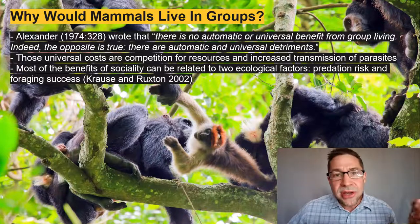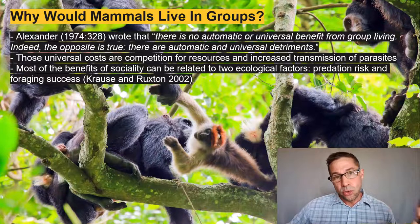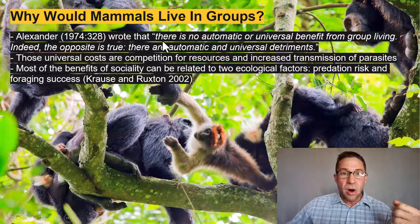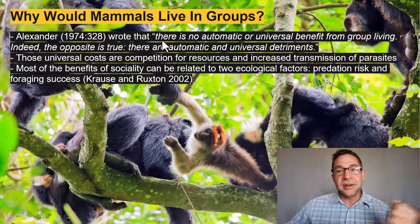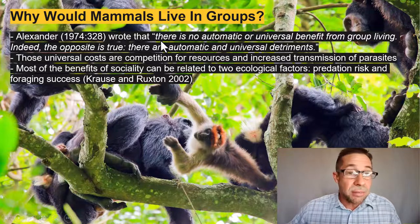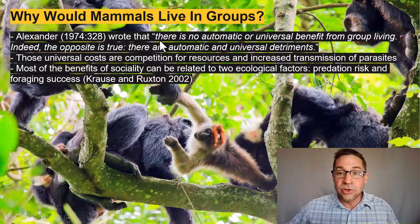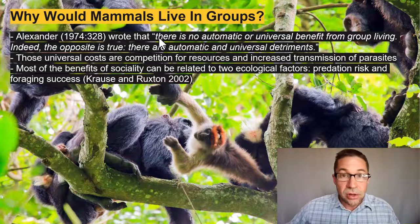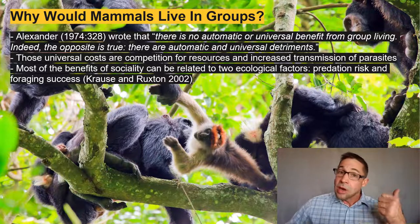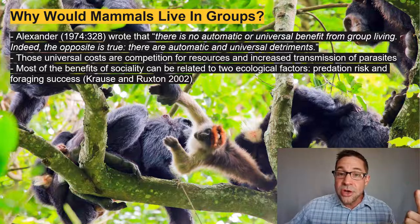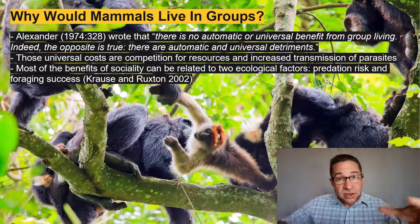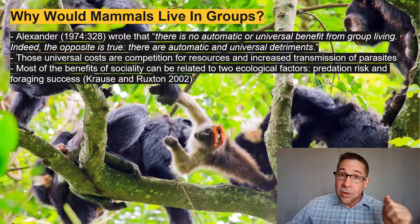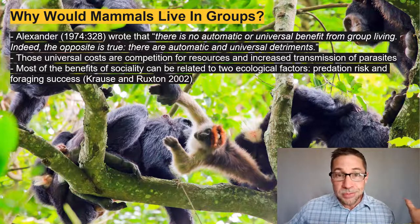So why would natural selection favor group living in mammals? In 1974, Alexander wrote there is no automatic or universal benefit from group living — indeed, the opposite is true. There are clearly automatic and universal detriments to living in groups: competition for resources and increased transmission of parasites because you're in close proximity to your conspecifics. That said, there are benefits too, or all animals would be loners.